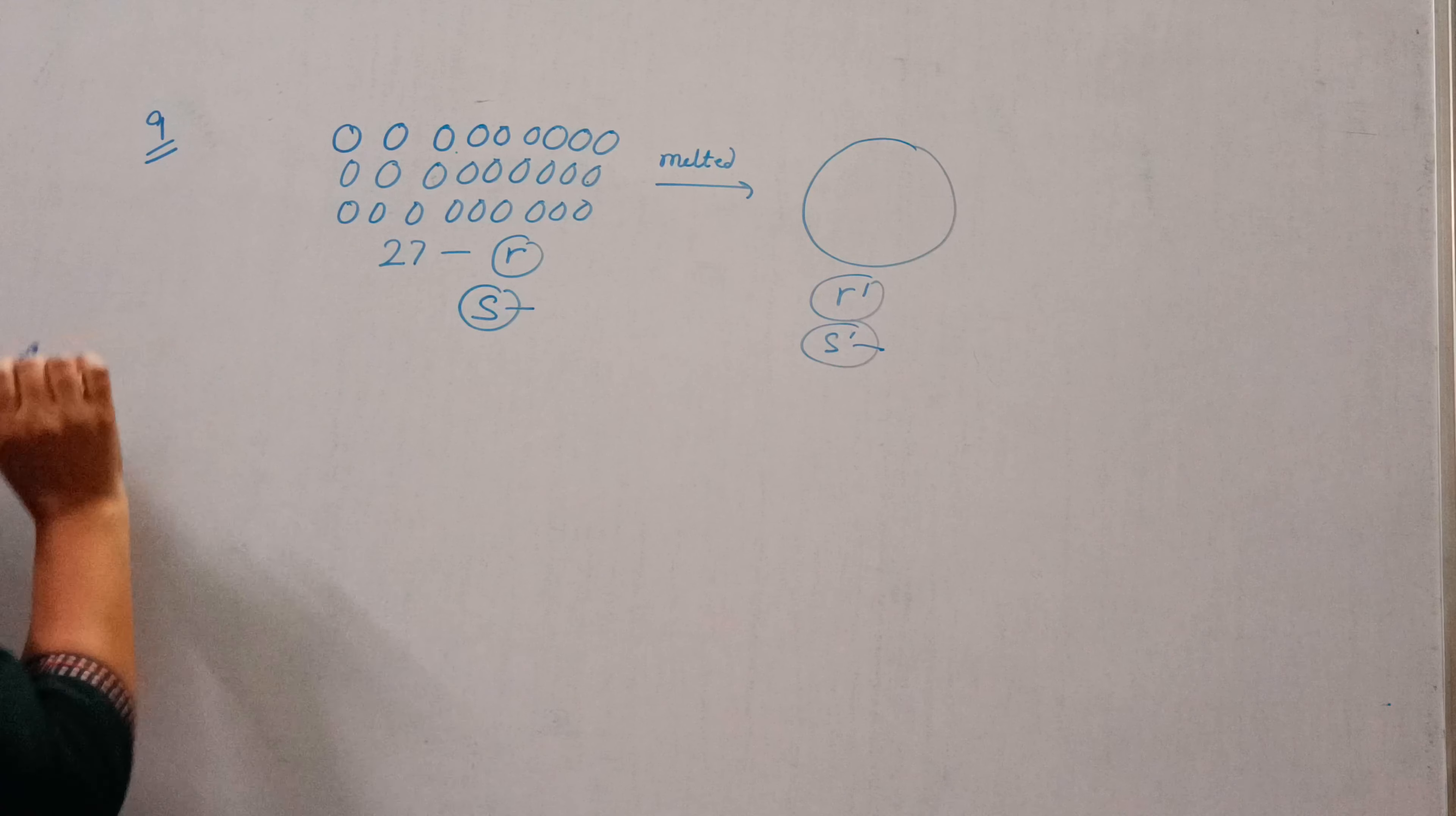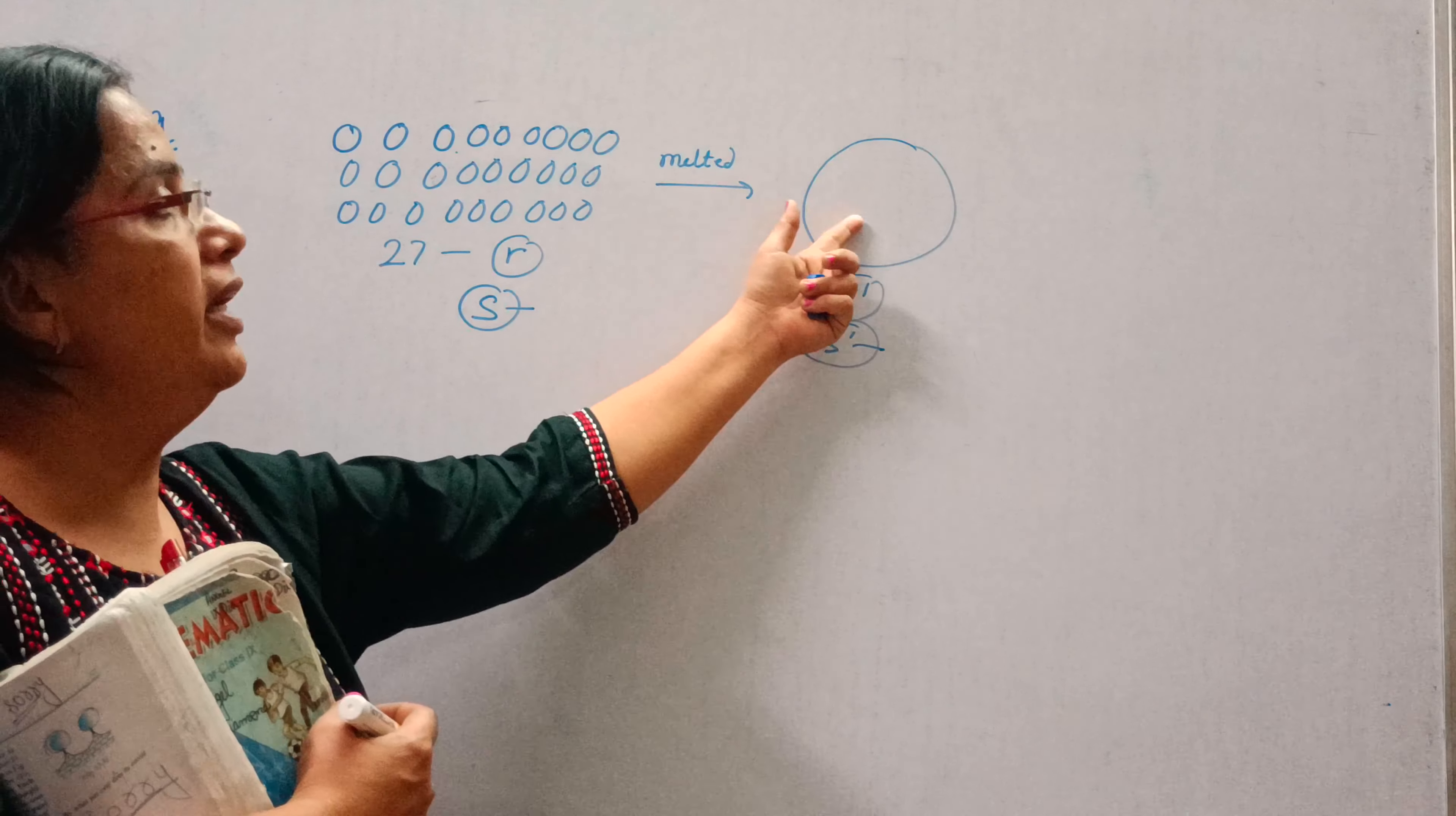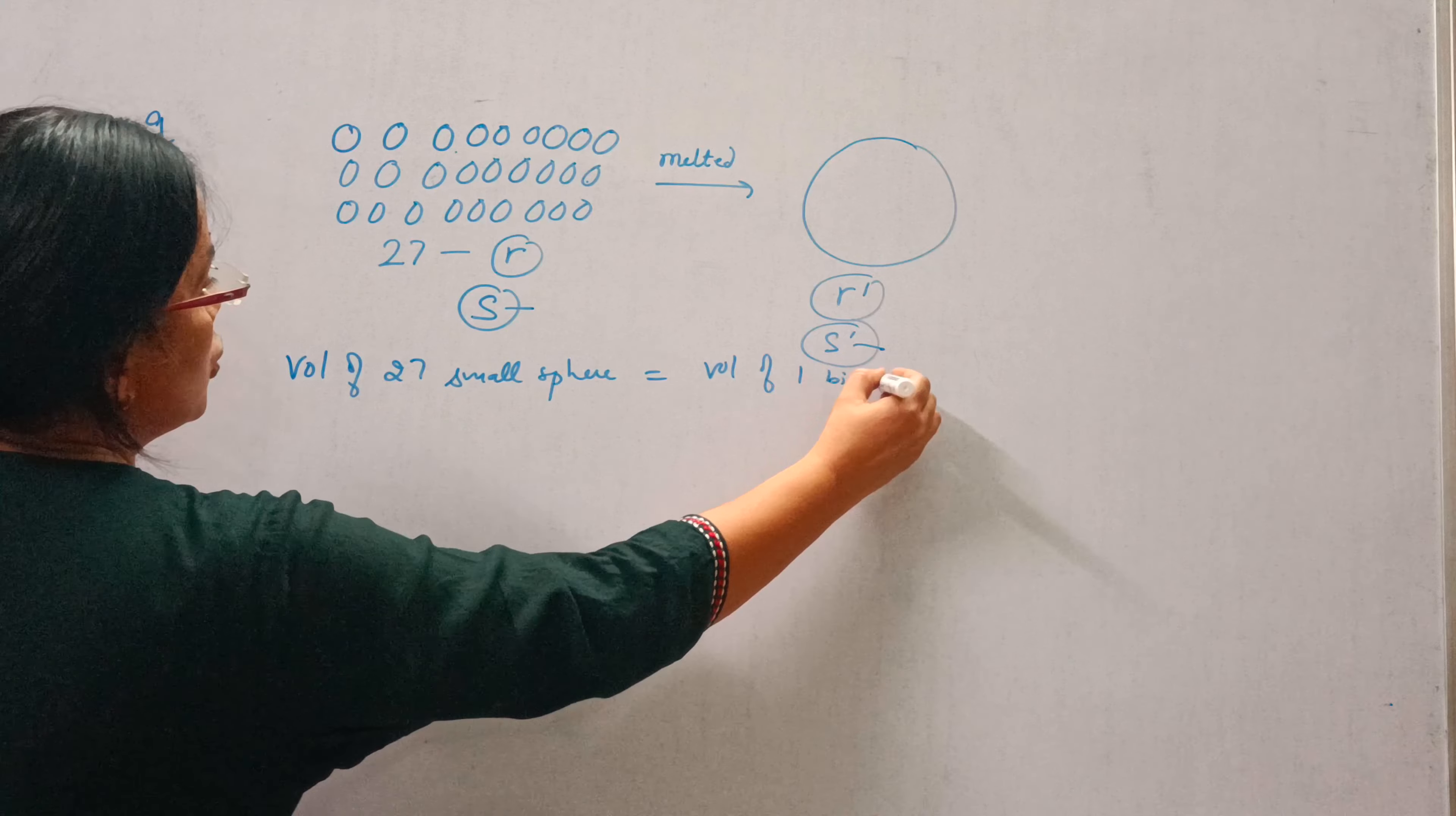So what is the concept in this question? 27 small spheres are melted to form a big sphere. In this case, the total volume of 27 spheres will be equal to volume of one big sphere. So we can write: volume of 27 small spheres is equal to volume of one big sphere.